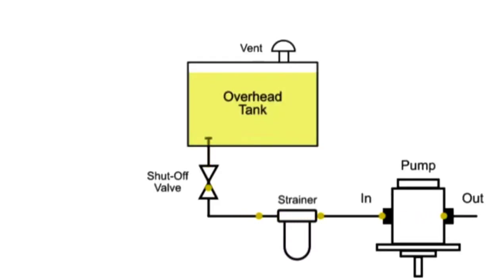The placement of fluid system components in relation to each other is critical to successful operation of the system. Fluid naturally flows from areas of high pressure to areas of low pressure. Pumps operate by creating low pressure at the inlet, which allows liquid to be pushed into the pump by atmospheric or pressure head.